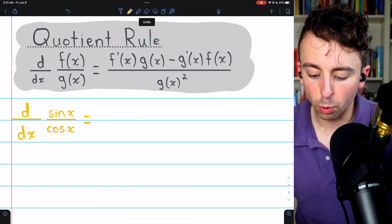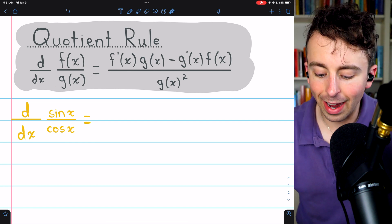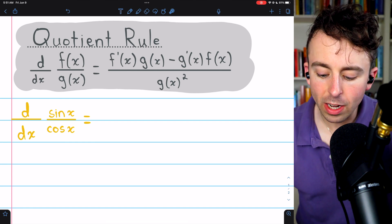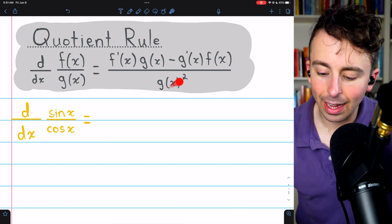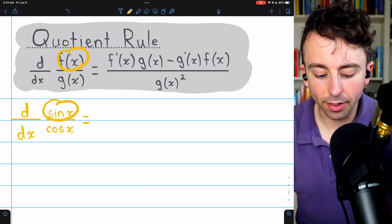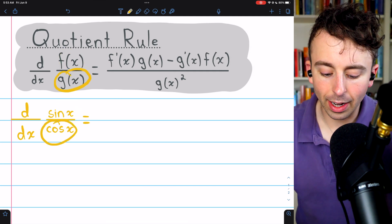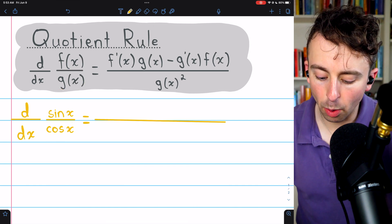Now the quotient rule, as you may recall, is the derivative of f(x) divided by g(x) is f prime times g minus g prime times f divided by g squared. Remember, f(x) is sine of x because that's the numerator. g(x) is cosine of x because that's the denominator. So let's apply the formula and see what we get.